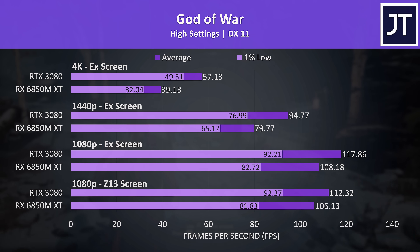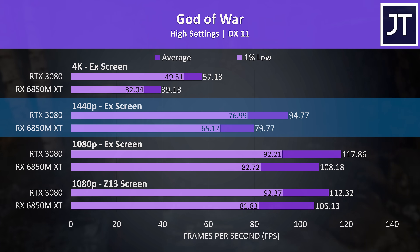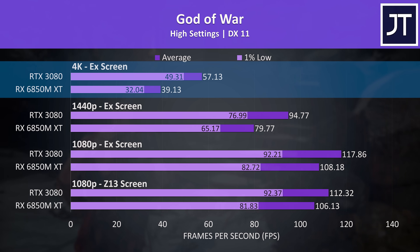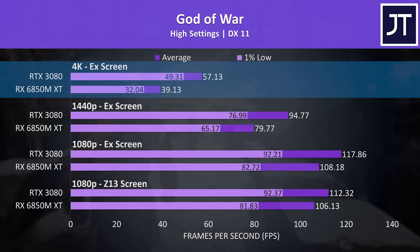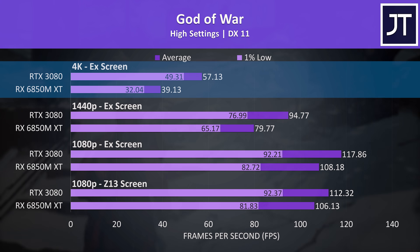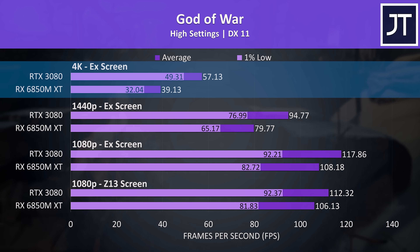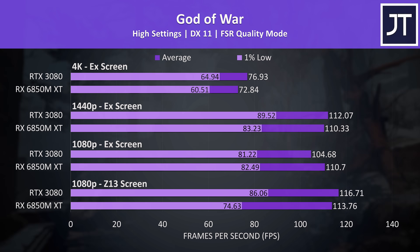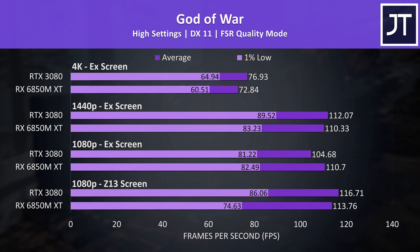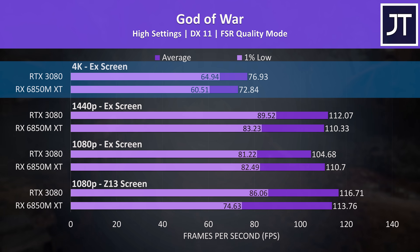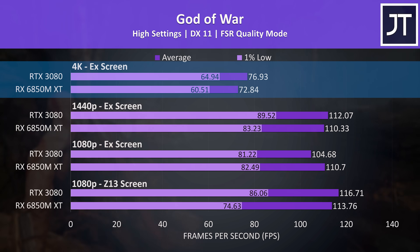God of War had fairly average differences at 1080p and 1440p with the RTX 3080 9% and 19% ahead respectively, but at 4K it has the biggest lead out of all 14 games — a 46% higher average frame rate, with the 3080 nearly hitting 60 FPS while AMD was far behind. This game does have both FSR and DLSS though. With FSR set to quality mode both GPUs achieve nice gains and are quite close together at 4K, a bigger relative gain for the 6850M XT.